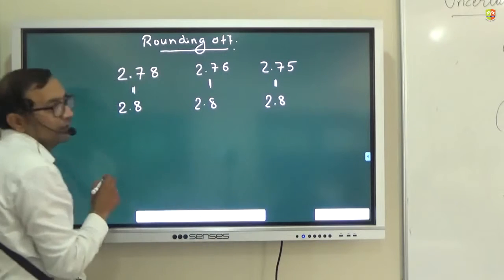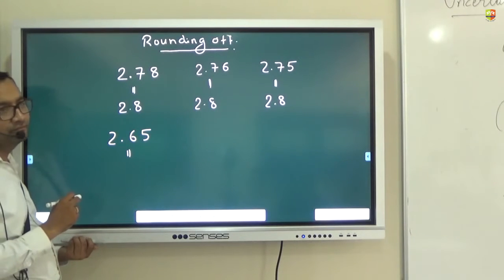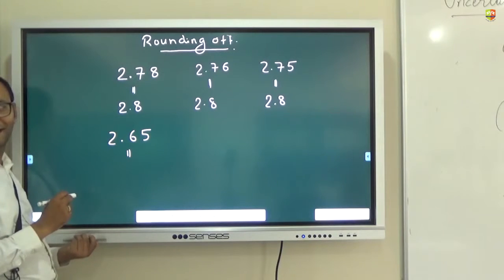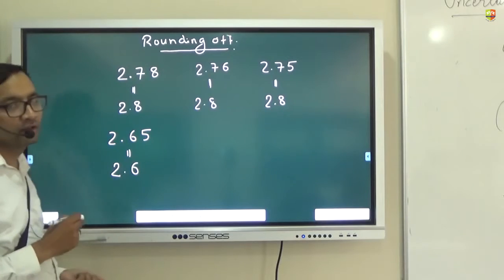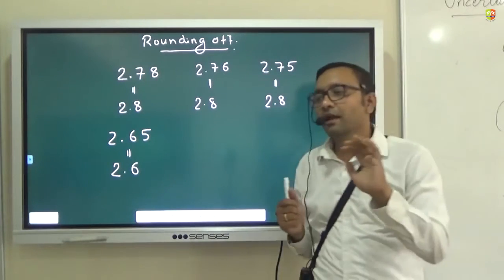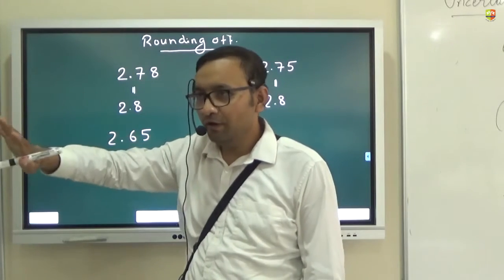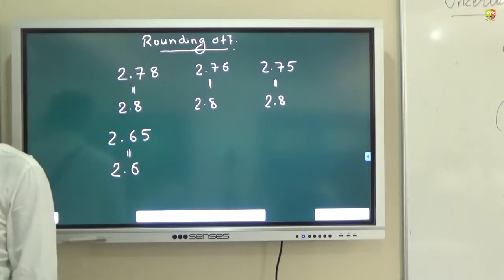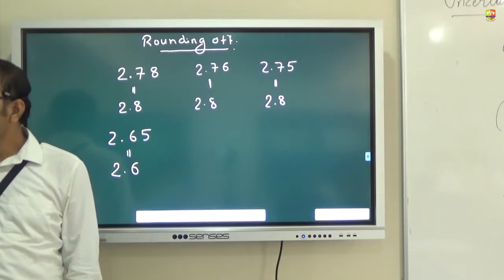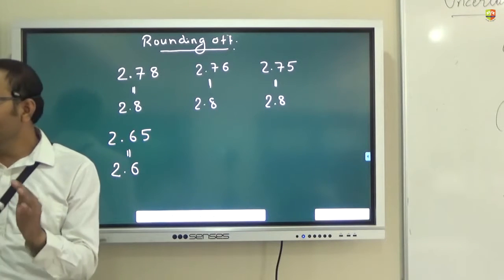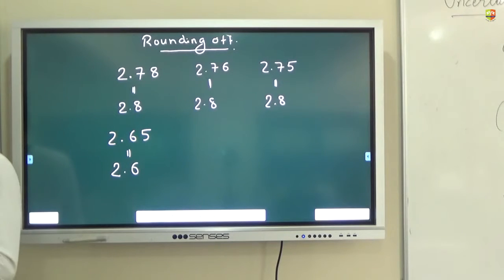2.8. What if it is 2.65? 2.6. So guys, there is no ambiguity if you are rounding off a digit which is more than 5—no ambiguity whatsoever. If it is more than 5, you just increase the number preceding to it. But if it is 5, it is exactly in between. So you should have a rule so that half the time you increase, half the time you leave it.